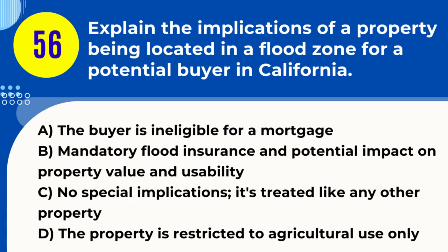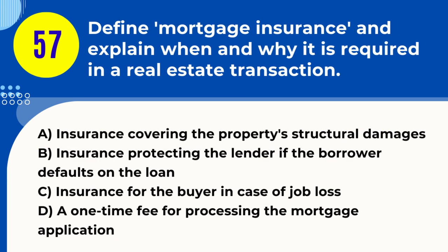Question 56. Explain the implications of a property being located in a flood zone for a potential buyer in California. A. The buyer is ineligible for a mortgage. B. Mandatory flood insurance and potential impact on property value and usability. C. No special implications, it's treated like any other property. D. The property is restricted to agricultural use only. Answer: B. Explanation. For a property located in a flood zone in California, potential buyers face implications such as the requirement to purchase flood insurance if they use a federally backed mortgage. Additionally, being in a flood zone may impact the property's value, usability, and future development potential.